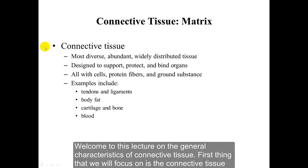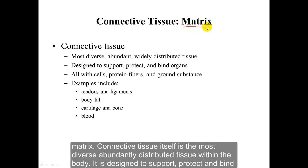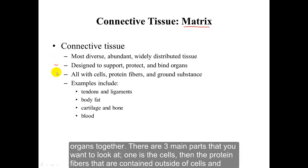Welcome to this lecture on the general characteristics of connective tissue. The first thing I want to focus on is the connective tissue matrix. Connective tissue itself is the most diverse, abundantly distributed tissue within the body. It is designed to support, protect, and bind organs together.